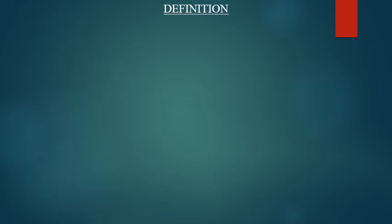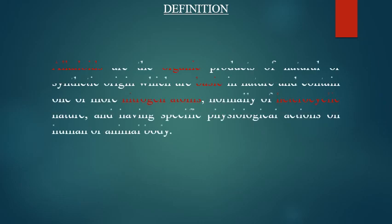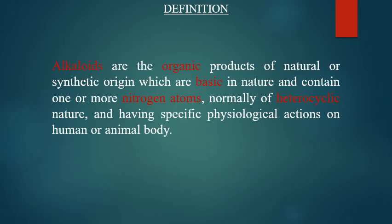Definition of Alkaloids: Alkaloids are the organic products of natural or synthetic origin which are basic in nature and contain one or more nitrogen atoms, normally of heterocyclic nature, and having specific physiological actions on the human or animal body.